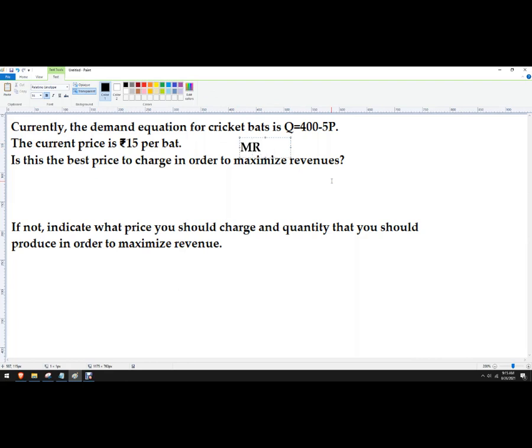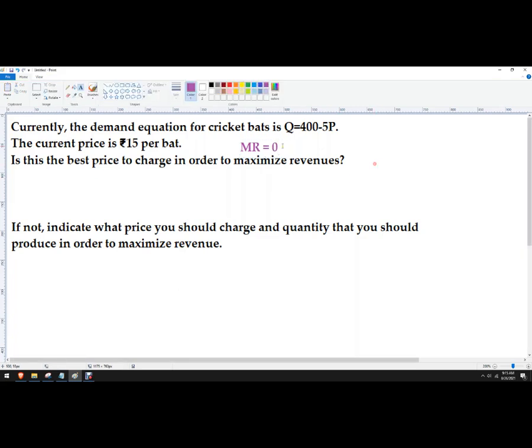So marginal revenue is going to be the additional revenue earned by the firm from selling additional products. Now if we set that to zero, that's going to give us our answer. The reason is because when marginal revenue is negative, then it's taking away from total revenue. And when marginal revenue is positive, it's increasing. So we want to find the point on the demand curve, which is a quantity and price combination where marginal revenue is zero. In other words, we've maximized our total revenue.